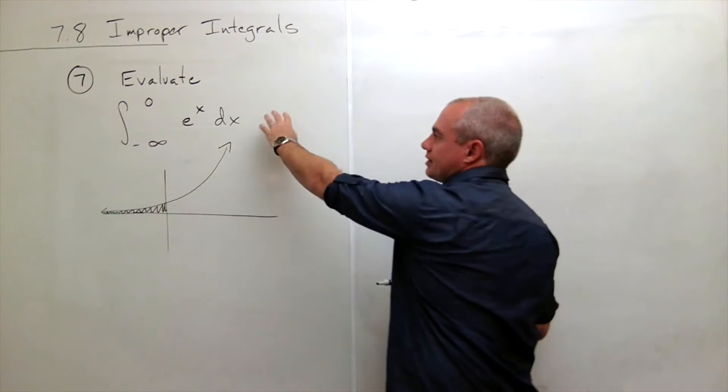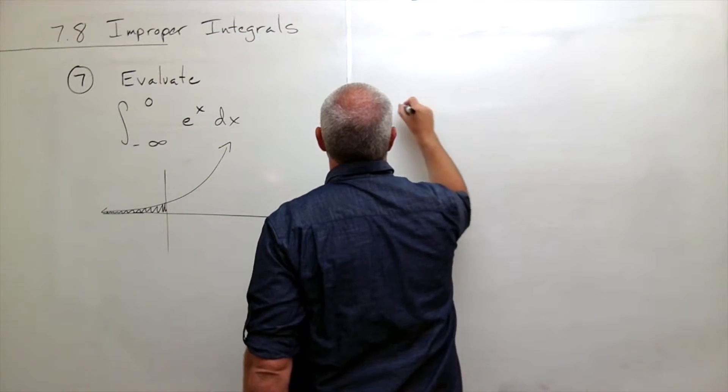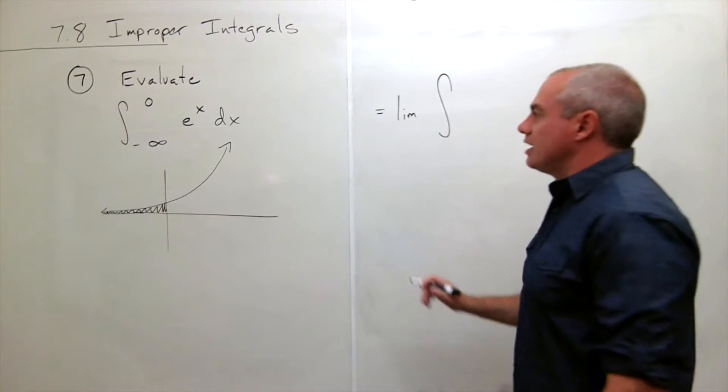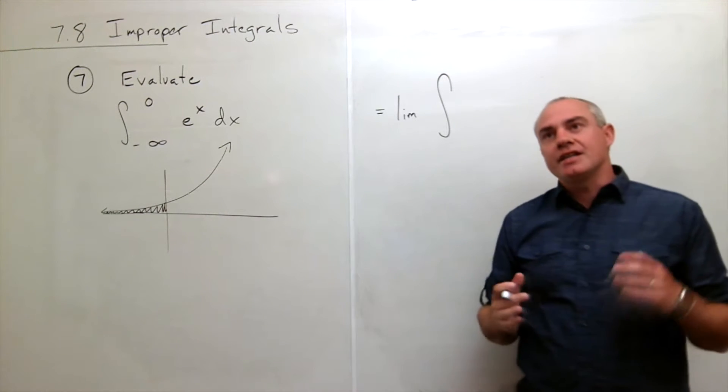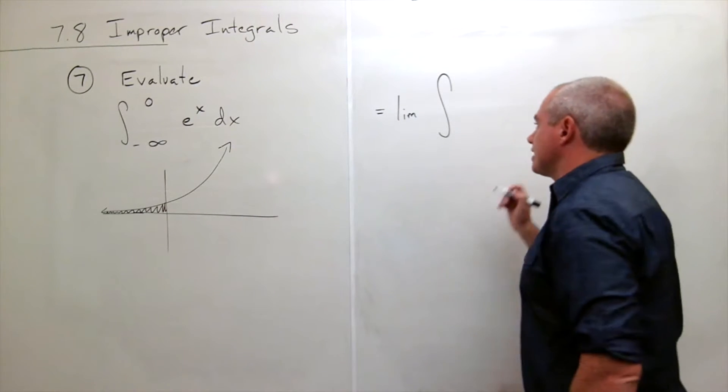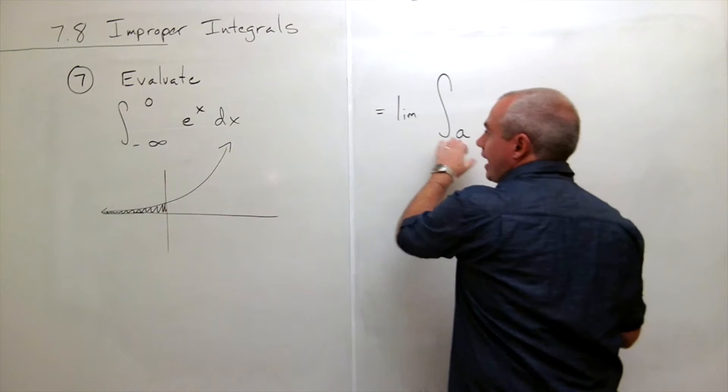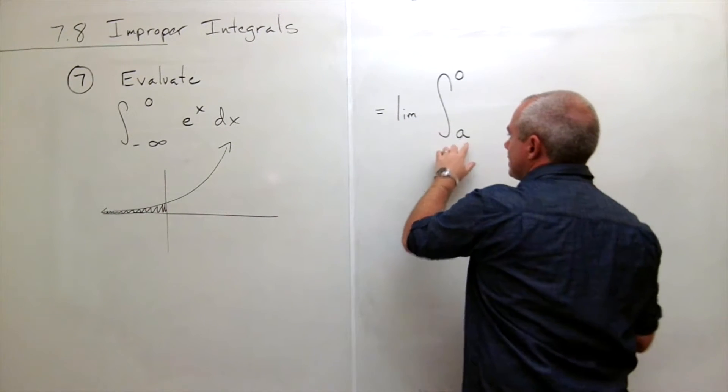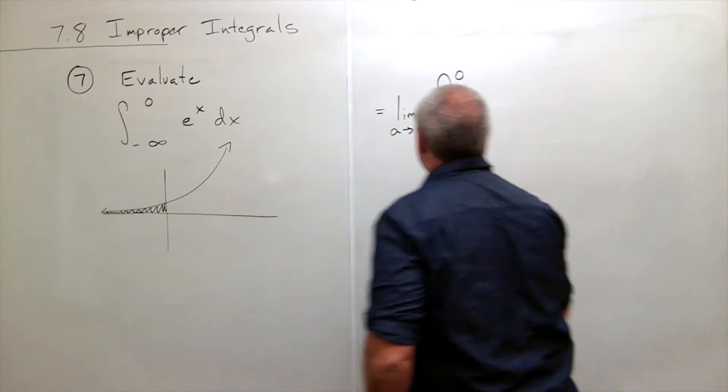Alright, so I'm going to rewrite this thing as a limit. This is equal to the limit. Now, what I'm going to do here is putting negative infinity into an integral isn't technically legal, and so what I do instead is I say, okay, I'm just going to integrate from some point a to zero, and then take the limit as a goes to minus infinity.